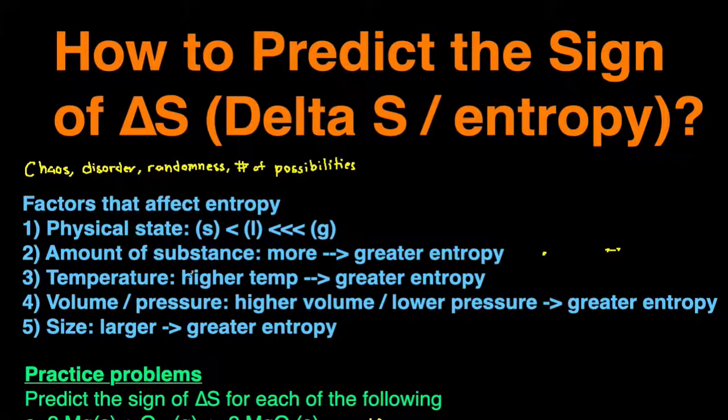Third, temperature. The higher the temperature, the greater the entropy, and that's because if you have a higher temperature then the molecules will move faster, so it'll be more random and more chaotic.